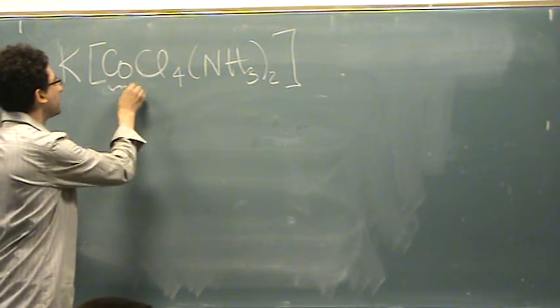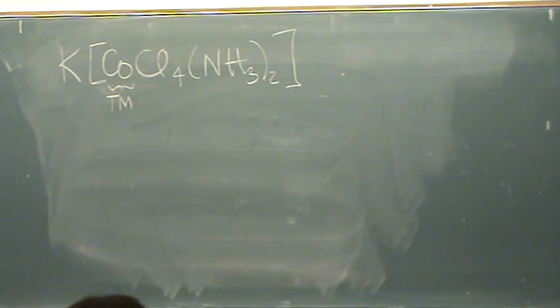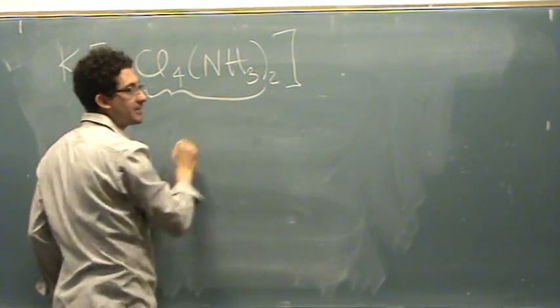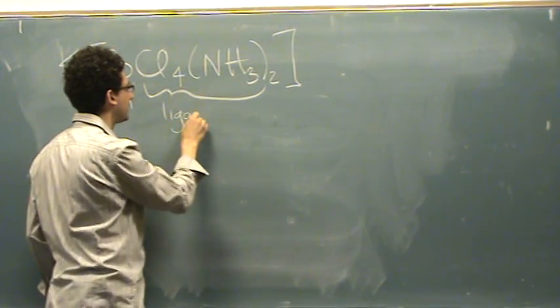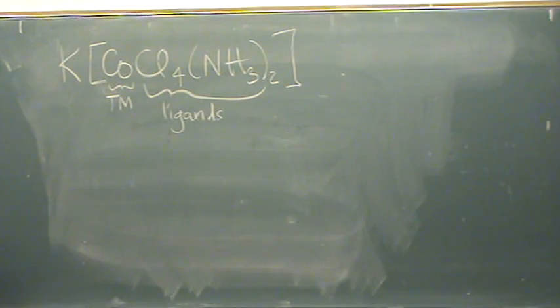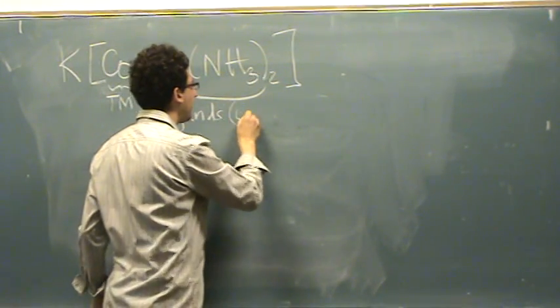So here's the transition metal, TM for transition metal. Things directly bonded to the transition metal, all this stuff, are called ligands. The ligands, from Chem 2B, are Lewis bases.